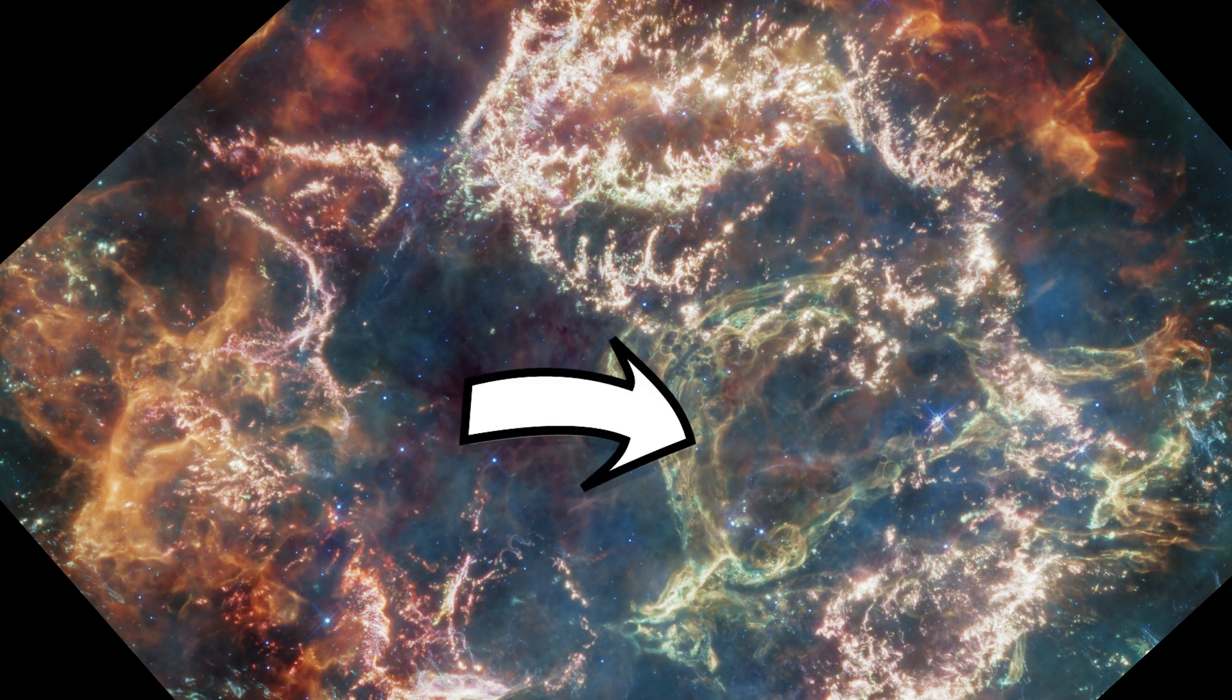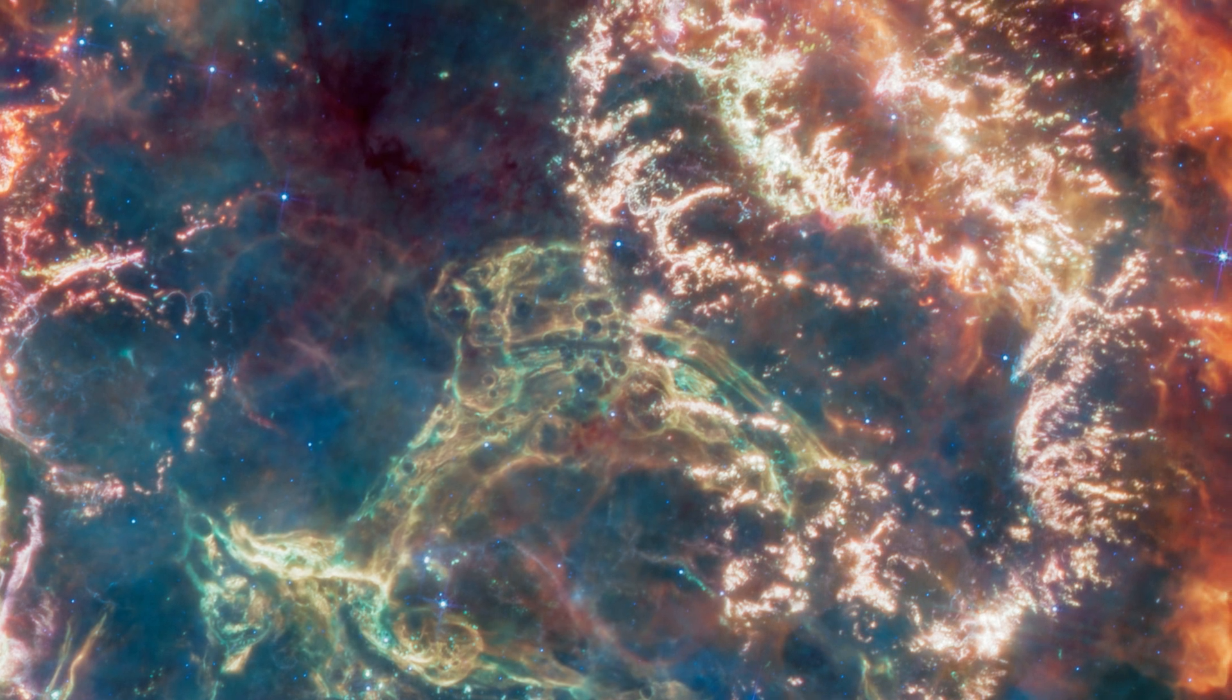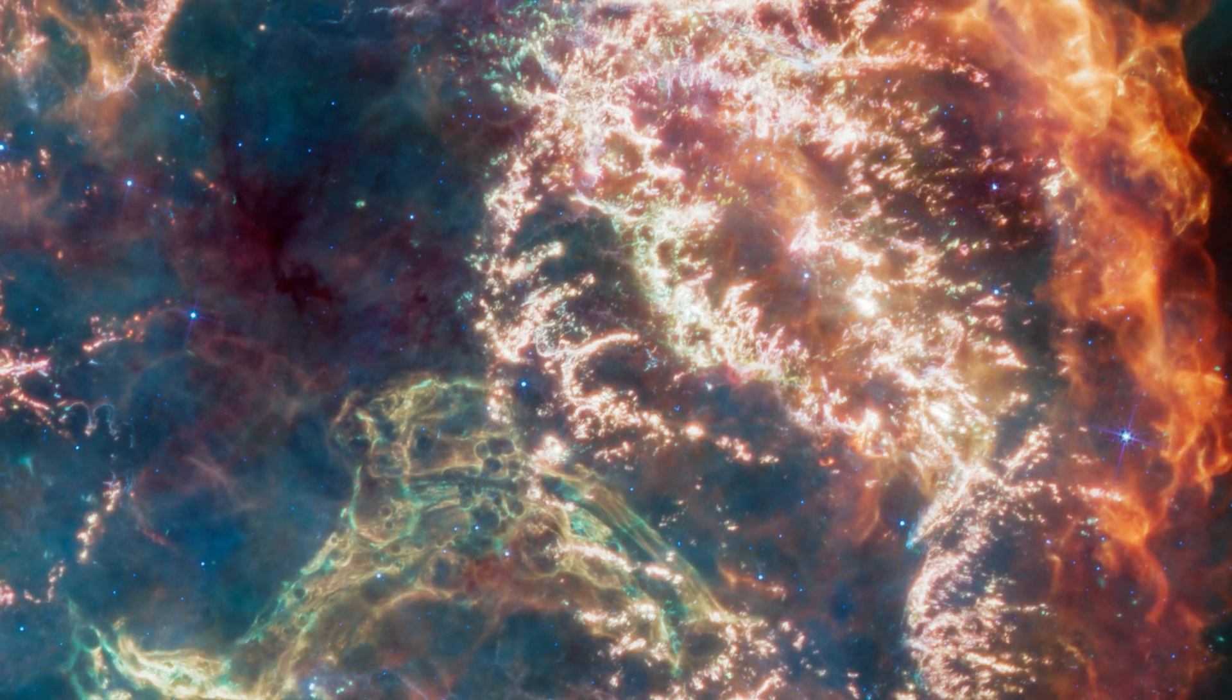This green loop in the center right, we have no idea what that is. It's a strange, complicated shape that we just have no clue about yet, but maybe more data from JWST could help us figure that one out.